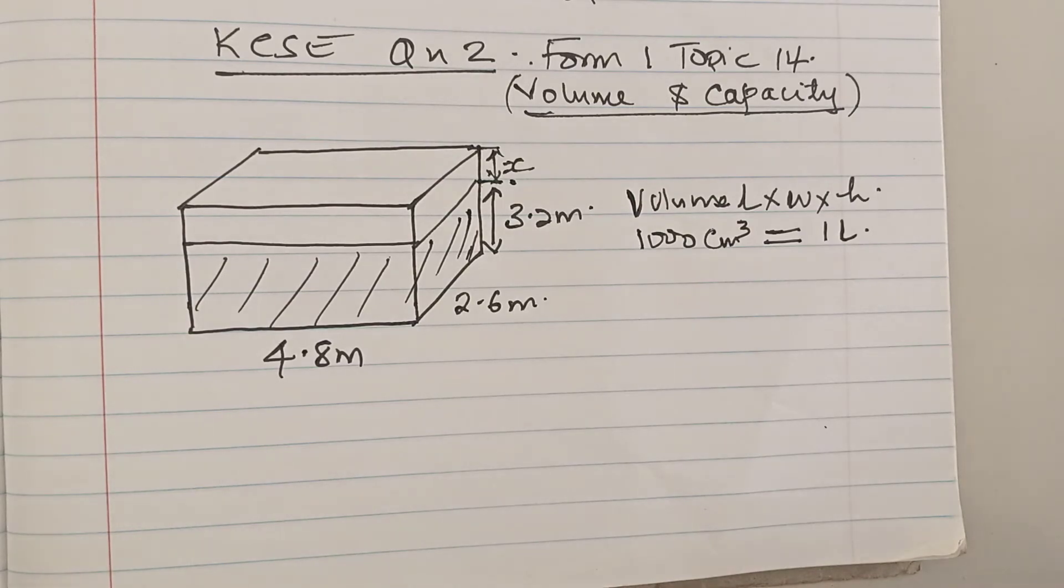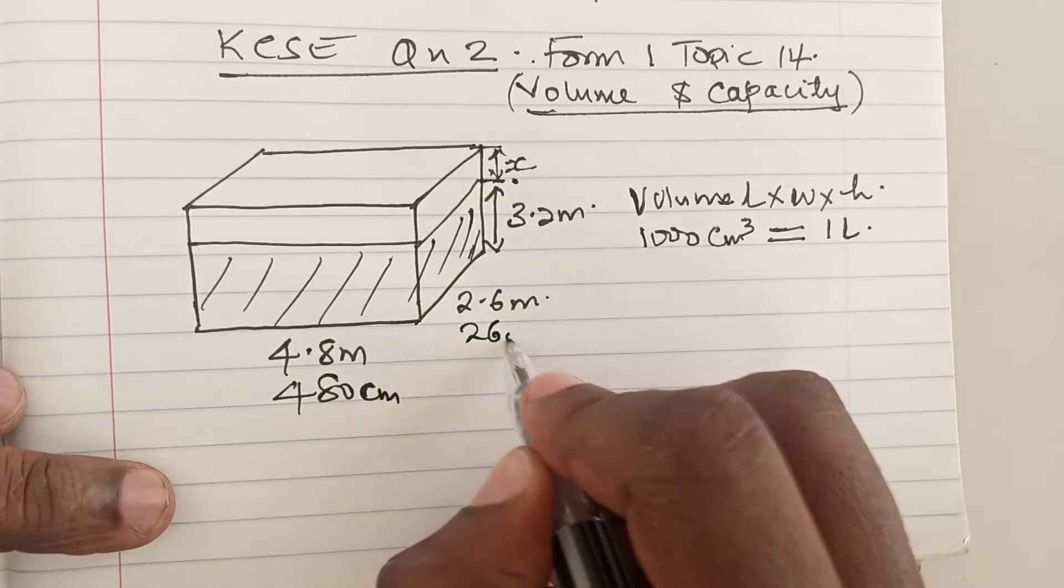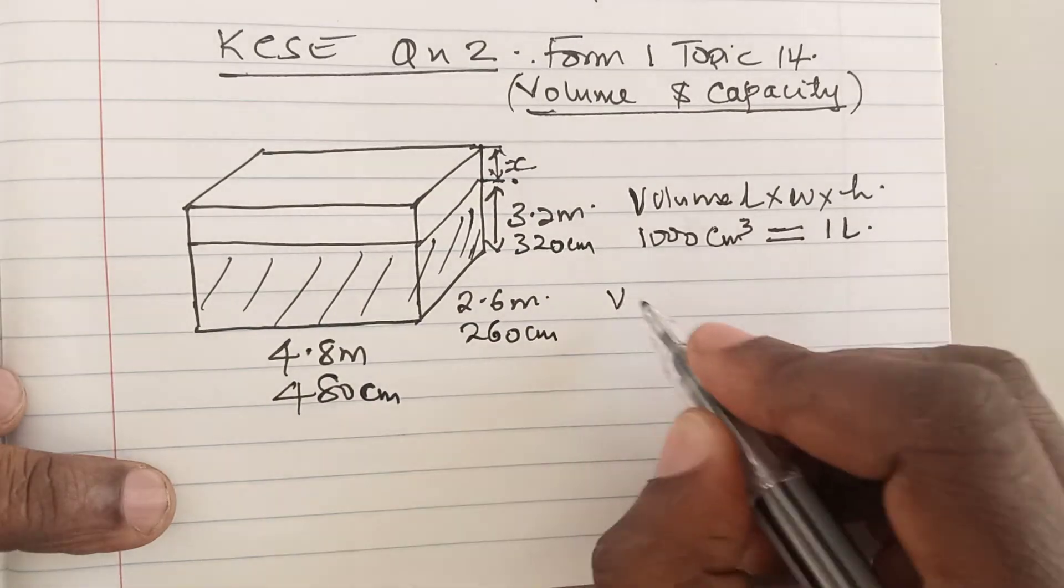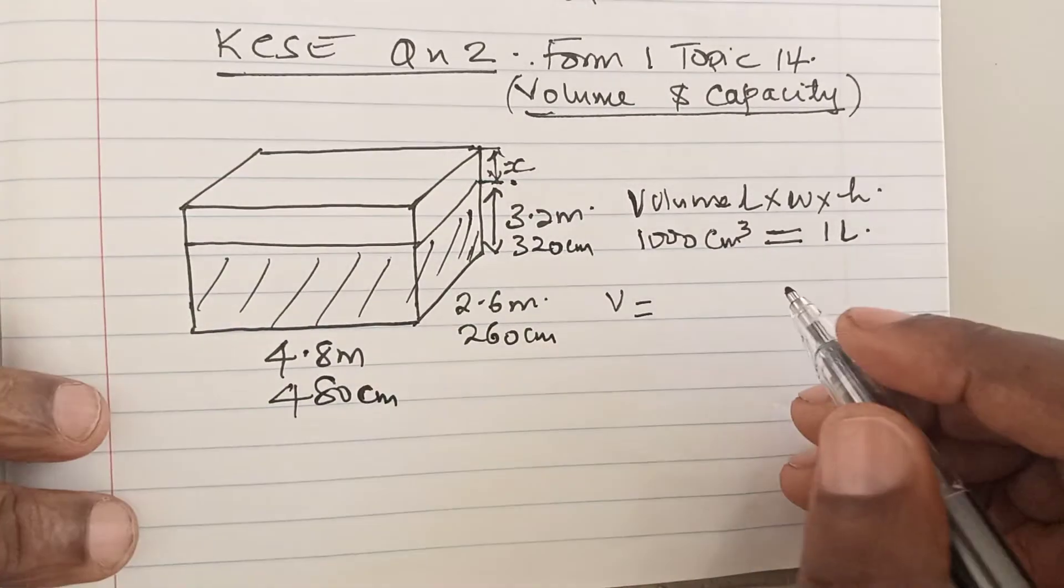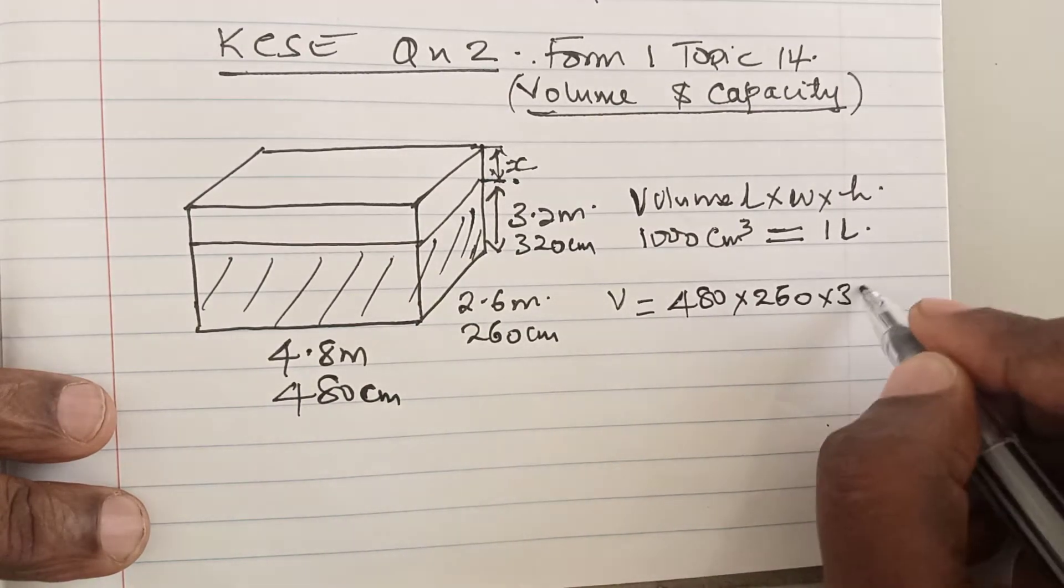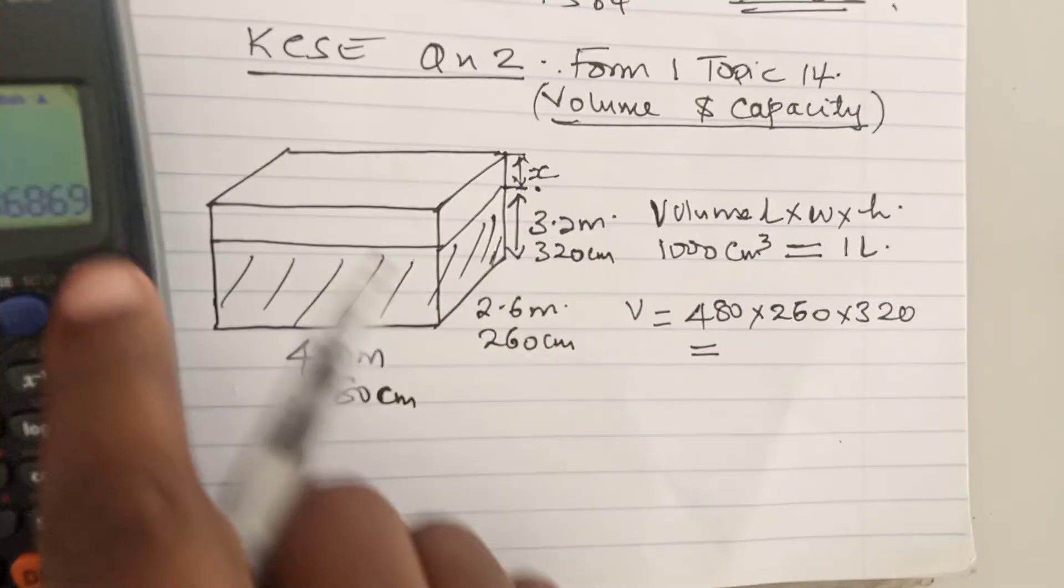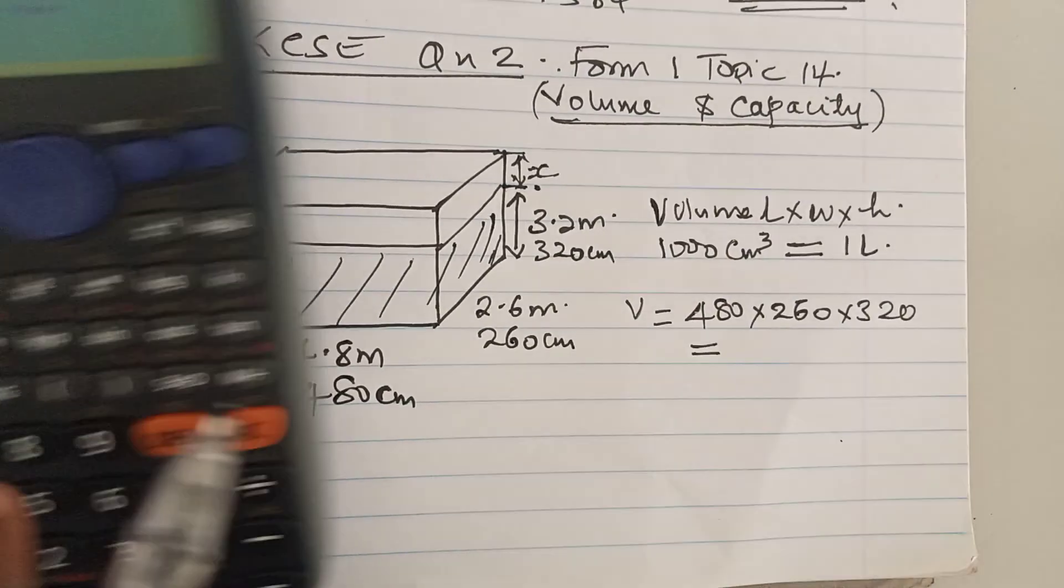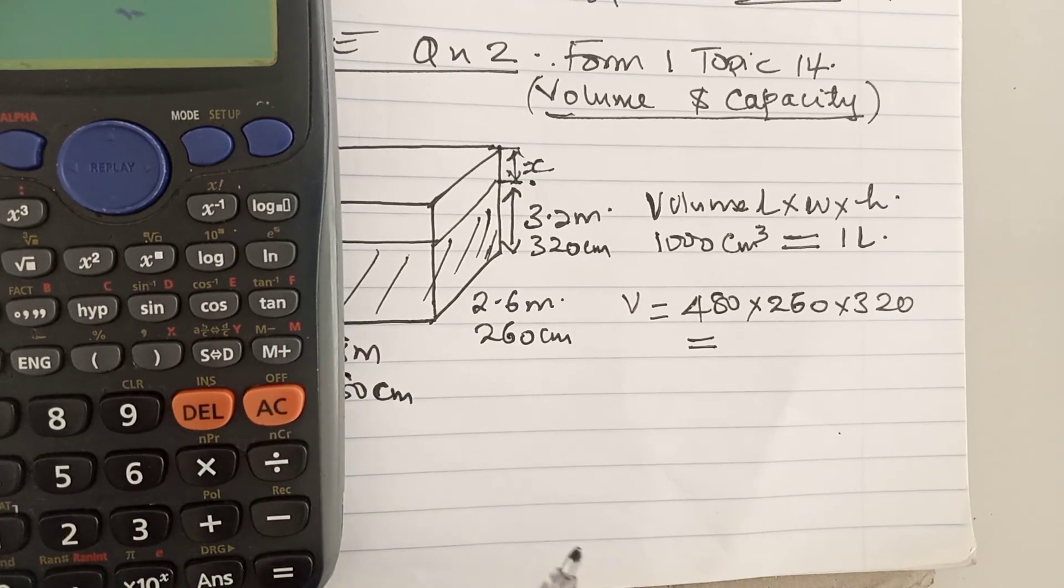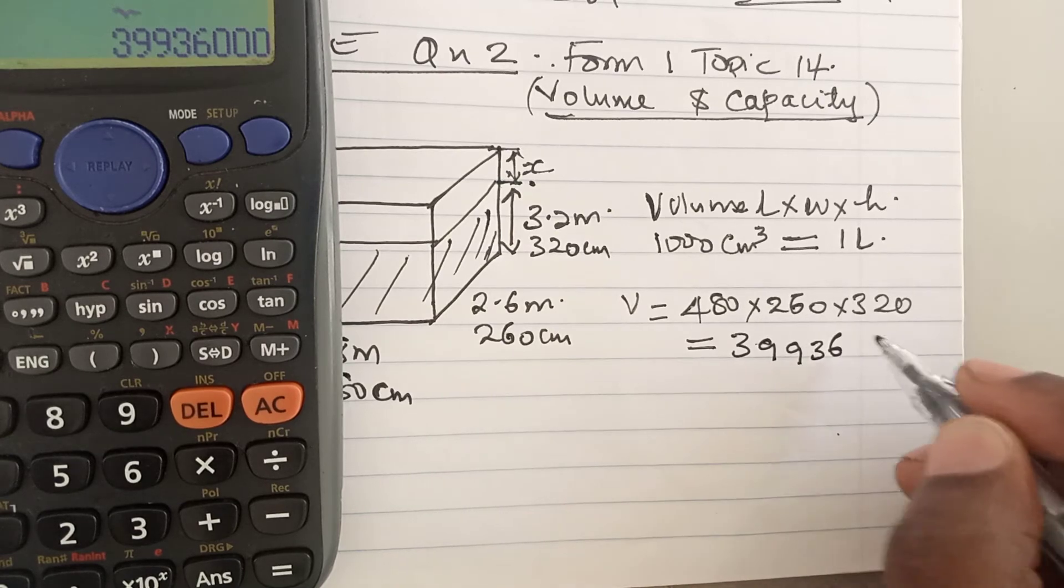We would be able to get the dimensions to be 480 centimeters, 260 centimeters, and 320 centimeters. So the volume as per now will be 480 times 260 times 320, which is going to be 39,936,000 centimeters cubed.